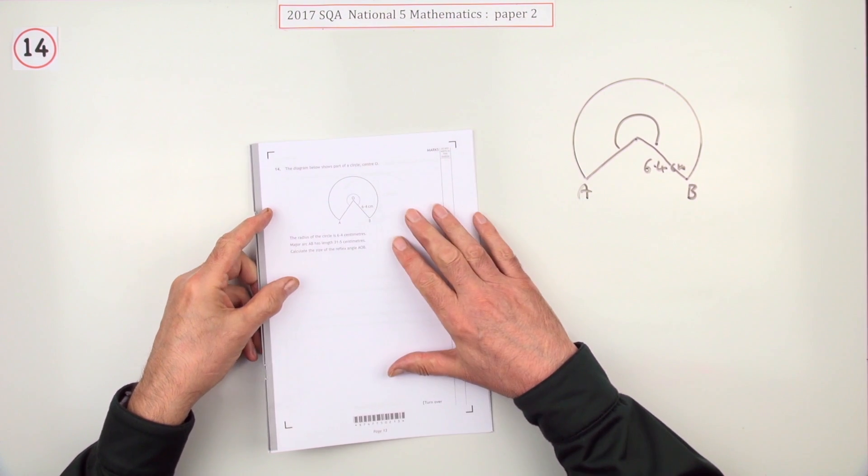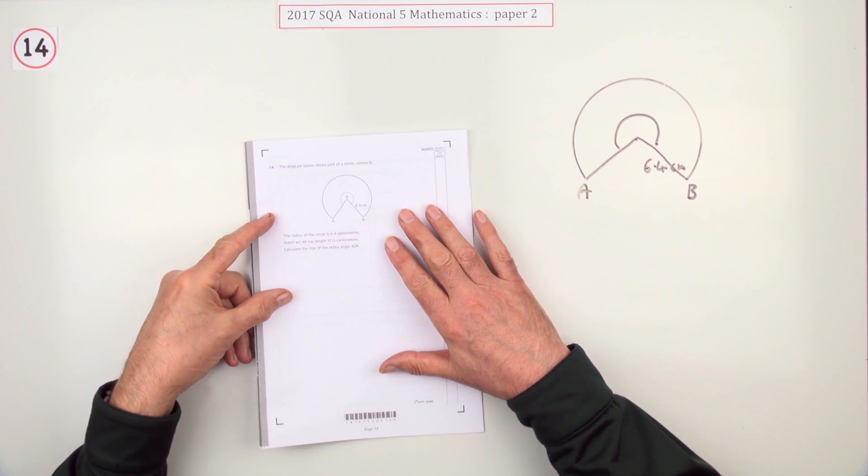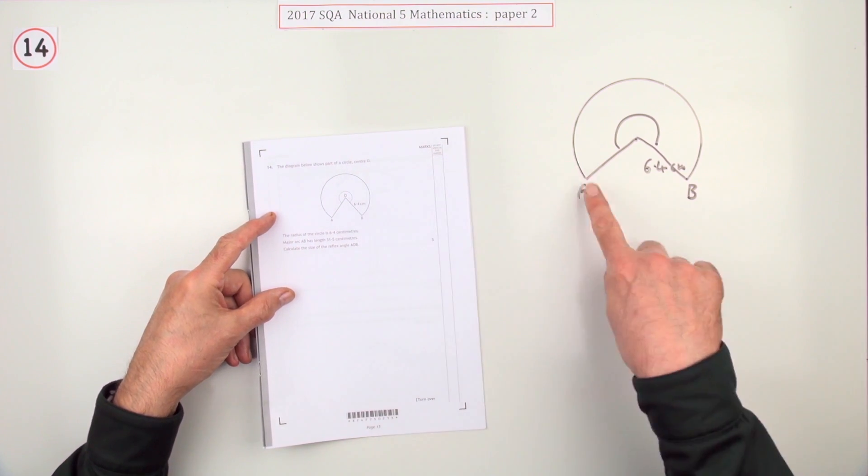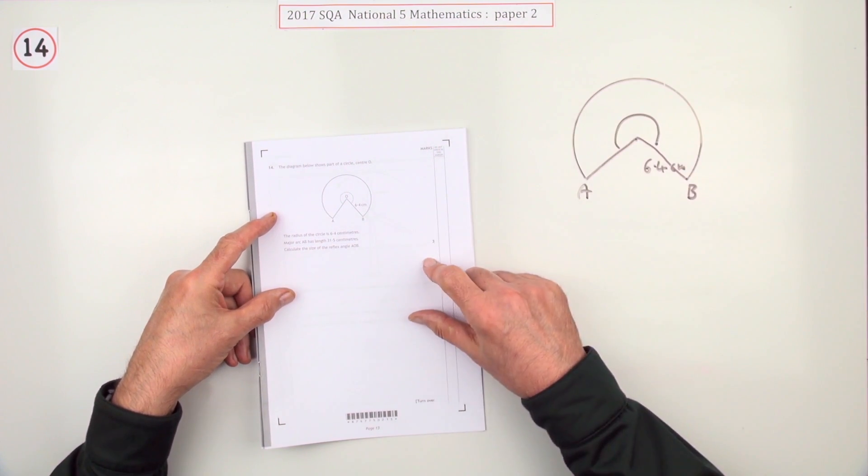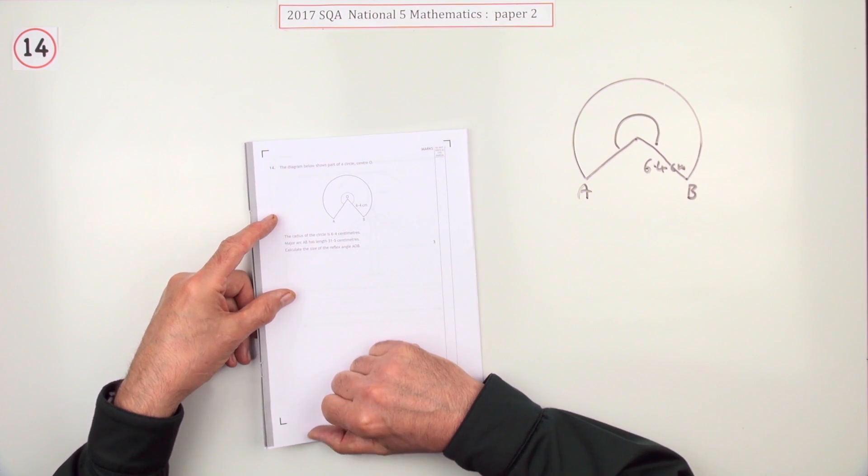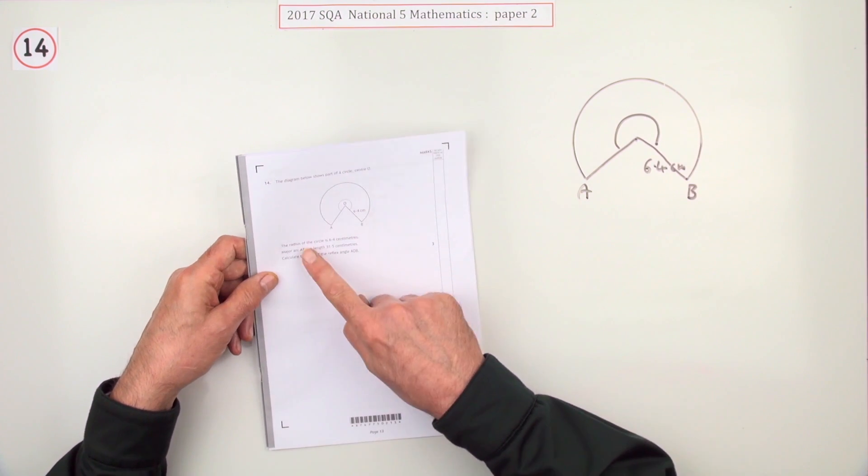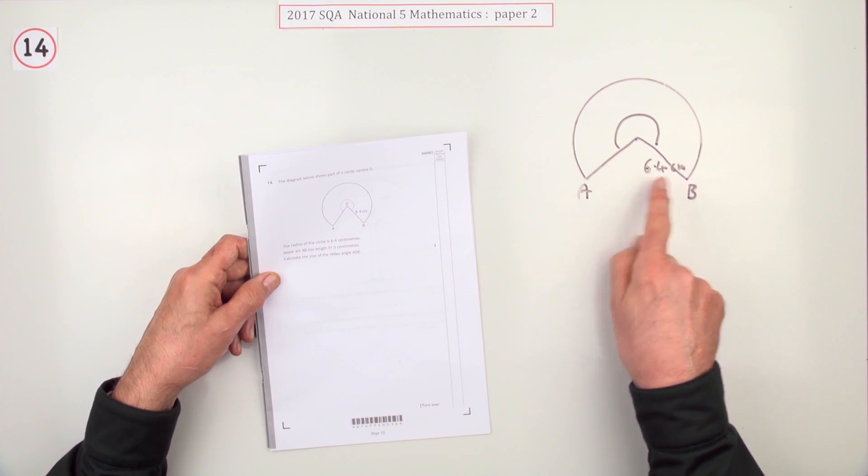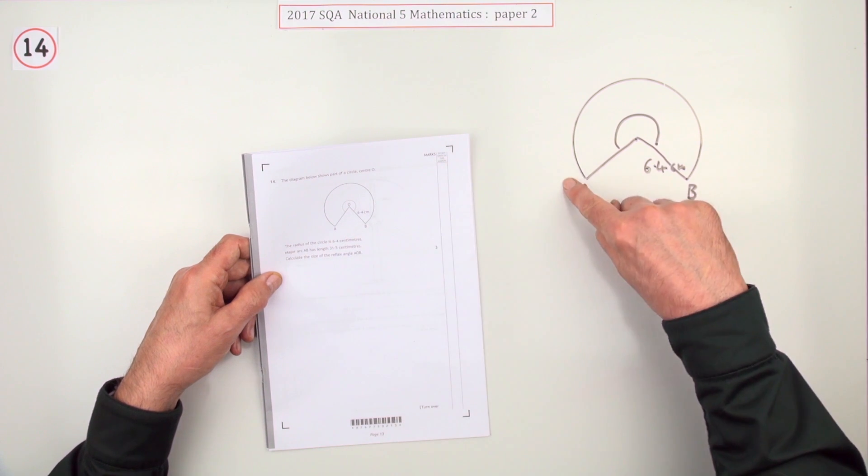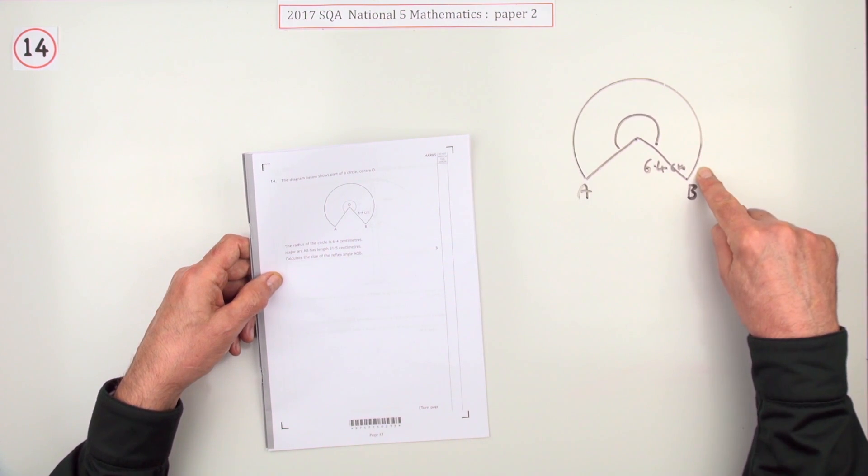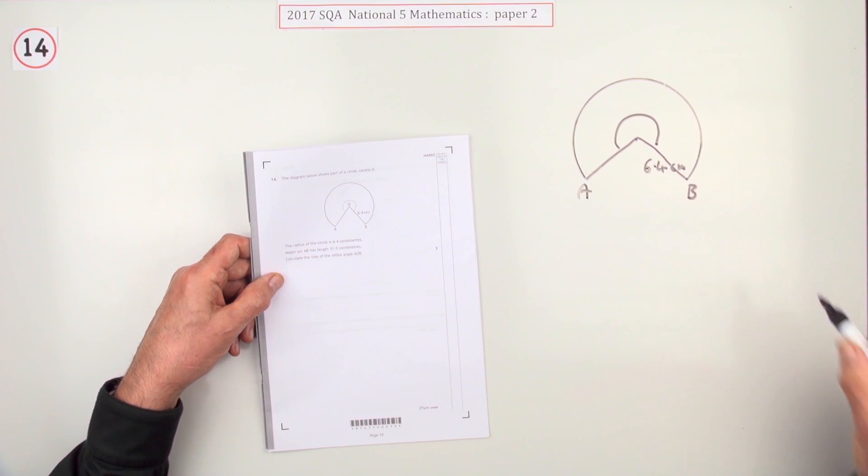Number 14 from paper 2 of the 2017 National 5. You'll recognize this as a fractions of a circle question. It gives you the radius of the circle is 6.4, and it tells you the length of the major arc is 31.5.